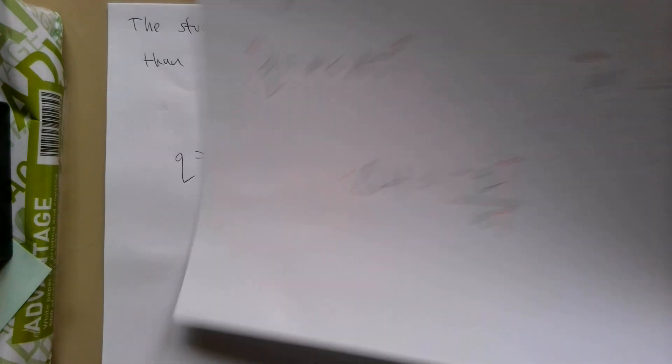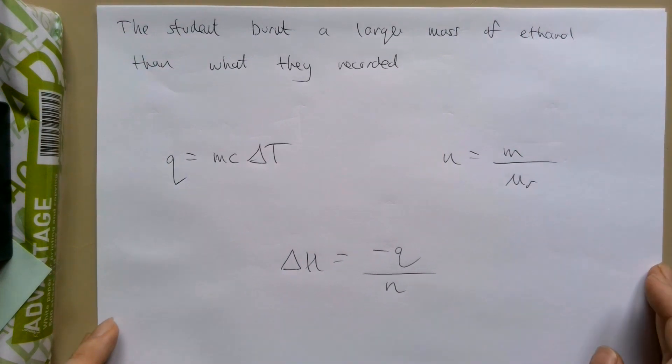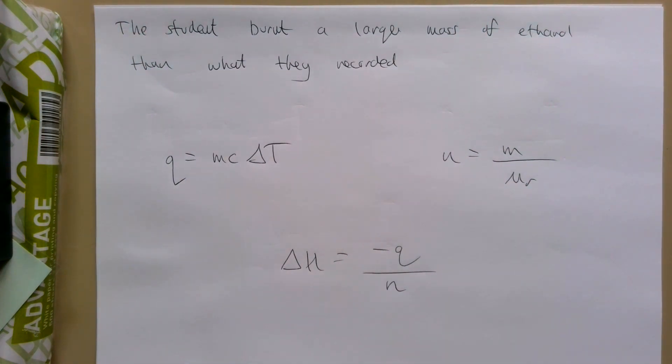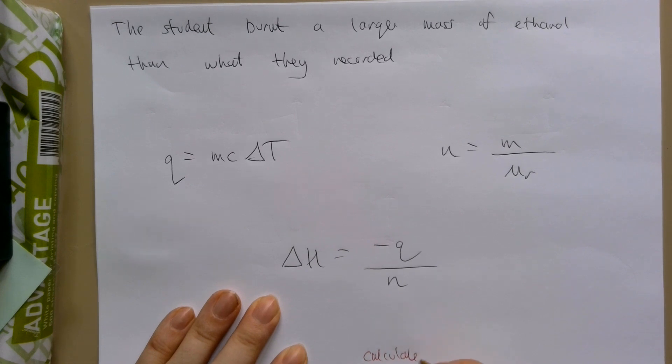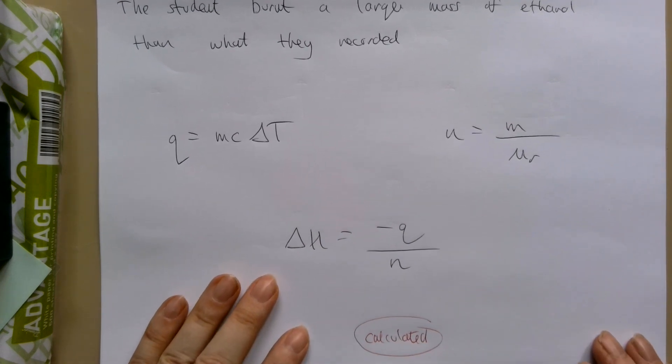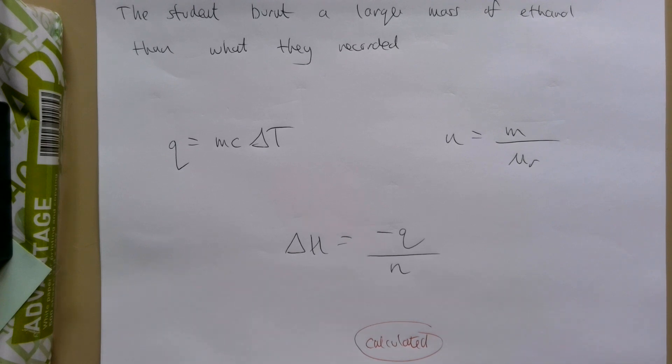Okay? Have a crack at this one. So this time, again, exactly the same experiment. But this time, the student burned a larger mass of ethanol, but they didn't record it as being a larger mass. They messed up their mass measurement. So they burned more mass than what they thought. Have a go with the arrows at running through this and try and figure out what their calculated delta H is. Not what the actual delta H is, but what would be the delta H they calculated. Have a crack at that.